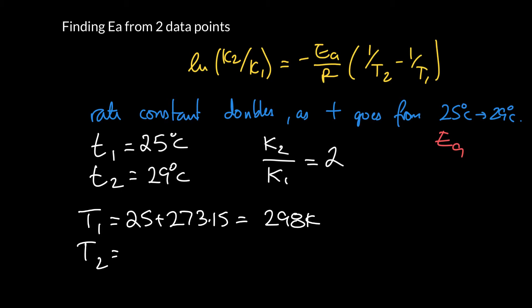And for T2, that is just four degrees hotter, so that would be 302 Kelvin. If we look at our problem, it looks like we've got a lot of information here. We've got T2, we've got T1, we've got this ratio of K2 over K1. And well, the gas constant is something we can just look up.